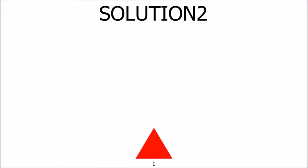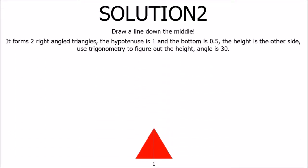To figure out the second way, use trigonometry. Then it forms two right triangles. The hypotenuse is 1 and the bottom is 0.5, the height is the other side.